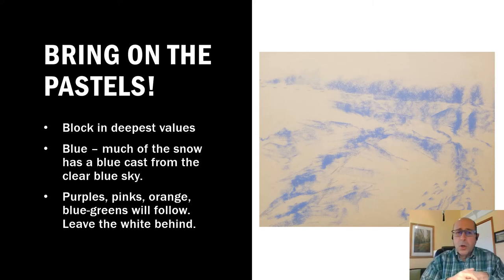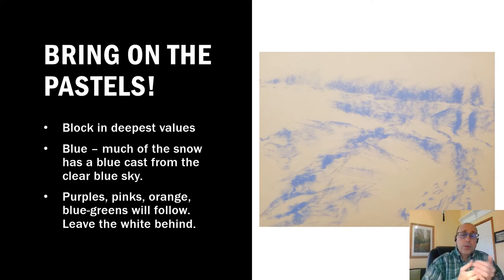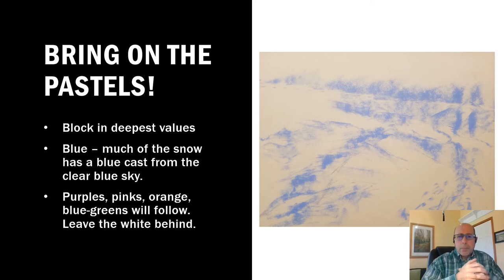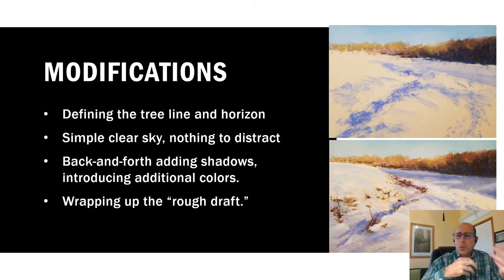I used blue for two reasons. First, the snow was very blue. The sky had a blue cast because it was a clear sky. If the sky was cloudy, pink, yellowish, or orange, those colors would reflect in the snow and you'd use more of those colors in your painting. Then we bring on additional colors: purples, pinks, orange, blue, greens. We leave very little white behind. This is a great opportunity for the artist to express a variety of hues while keeping the warm and cool color temperatures consistent and placed in the proper spots.